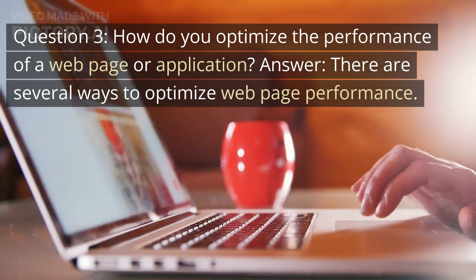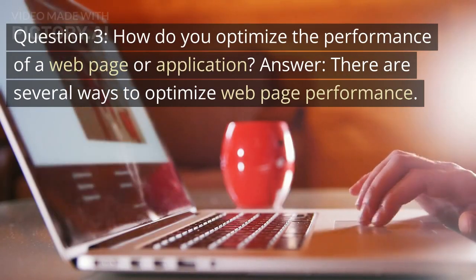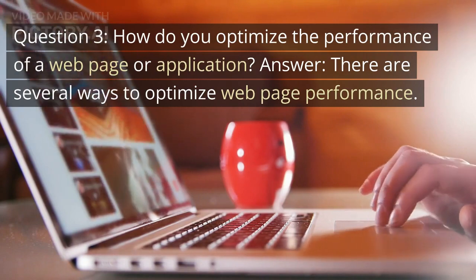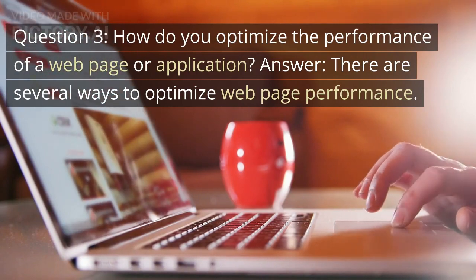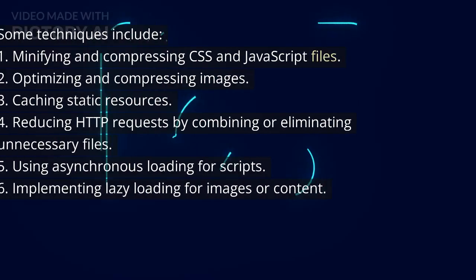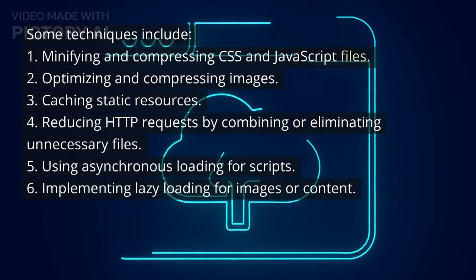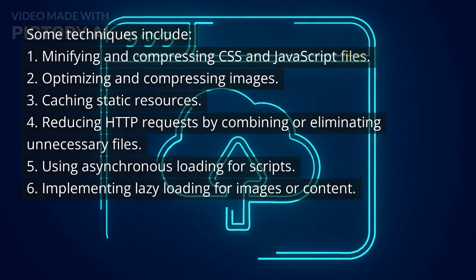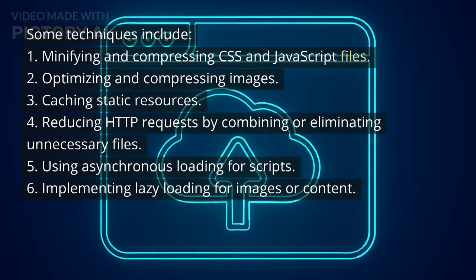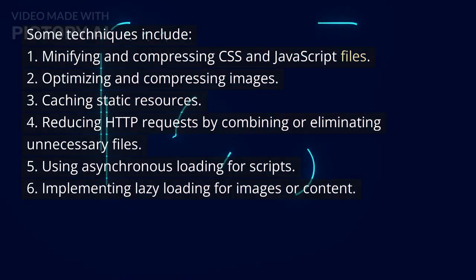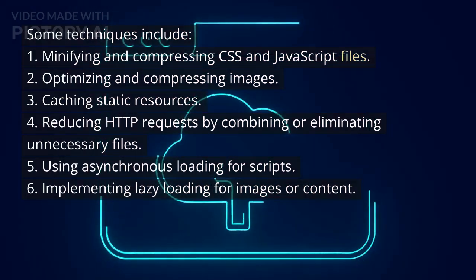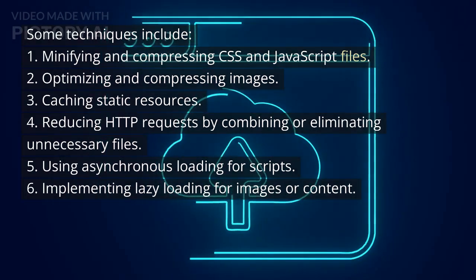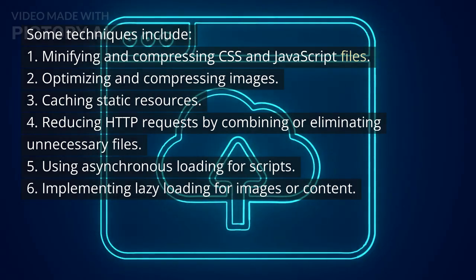Question 3: How do you optimize the performance of a web page or application? Answer: There are several ways to optimize web page performance. Some techniques include: 1. Minifying and compressing CSS and JavaScript files. 2. Optimizing and compressing images. 3. Caching static resources. 4. Reducing HTTP requests by combining or eliminating unnecessary files. 5. Using asynchronous loading for scripts. 6. Implementing lazy loading for images or content.